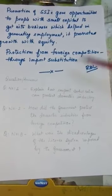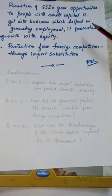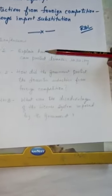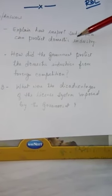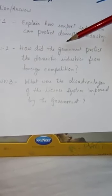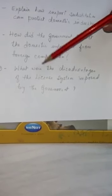Now answer these three assignment questions: Question one — explain how import substitution can protect domestic industry. Question two — how did the government protect domestic industries from foreign competition? Question three — what were the disadvantages of the license system imposed by the government? Thank you.